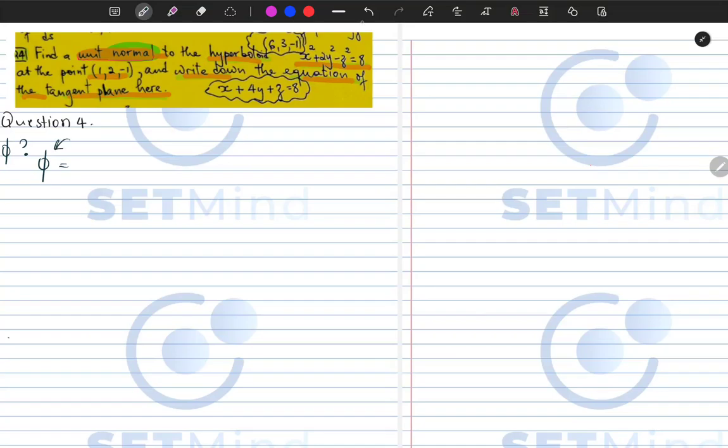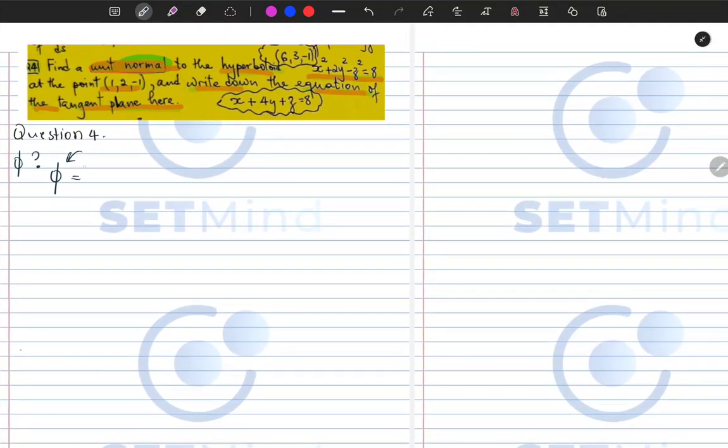And that side which has zero will have our function. So if you look at this problem it will be x squared plus 2y squared minus z squared minus 8.